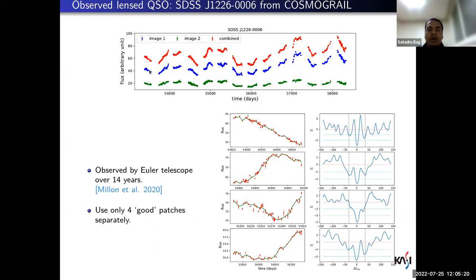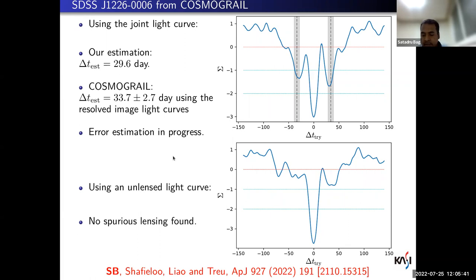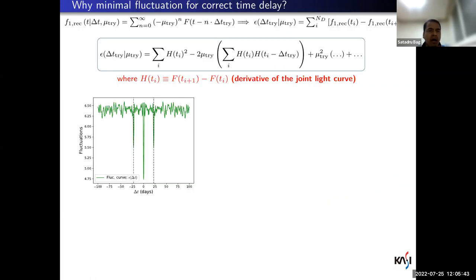This matches very well with what the COSMOGRAIL team found — remember they found it using the two resolved light curves, while we got it from the joint light curve. We also applied the same algorithm on one of the intrinsic quasar light curves rather than the joint light curve. We expect no spurious lensing detections, and indeed the resulting fluctuation curve shows no pair of symmetric secondary minima — it is classified as unlensed, passing the sanity check.